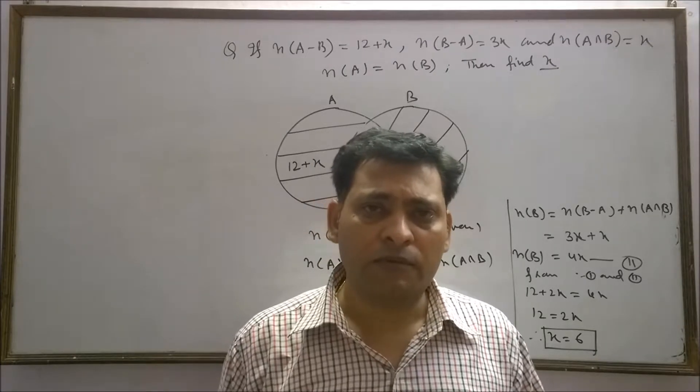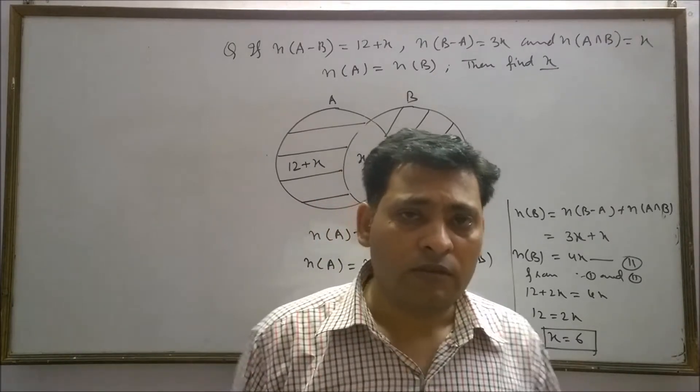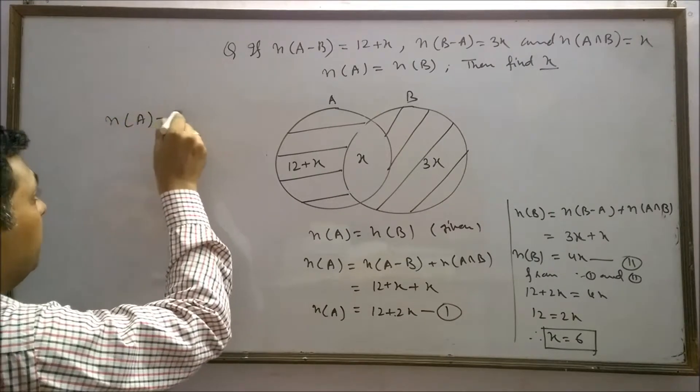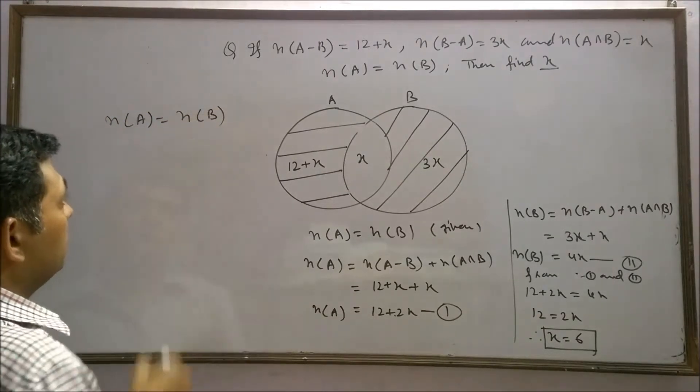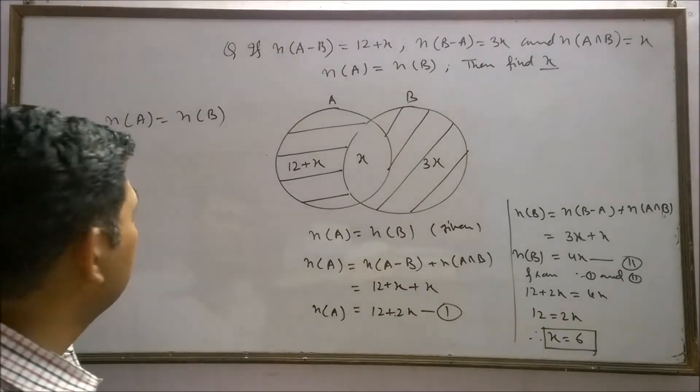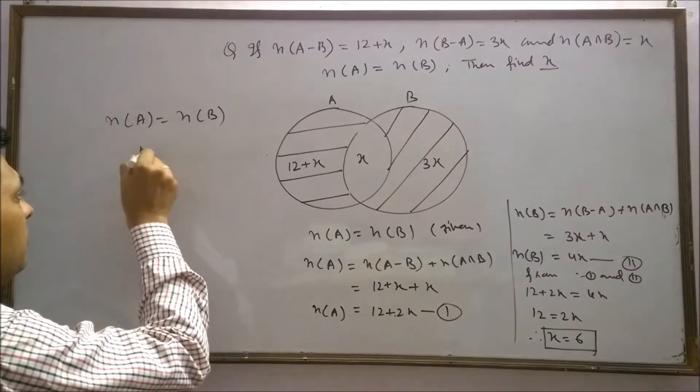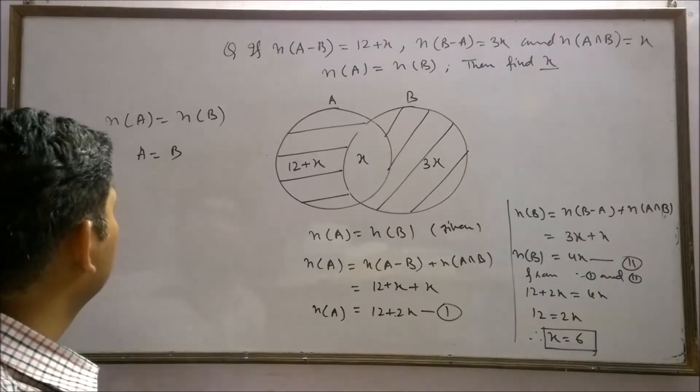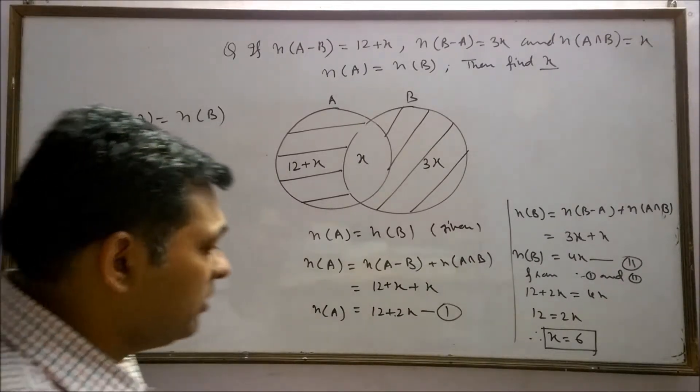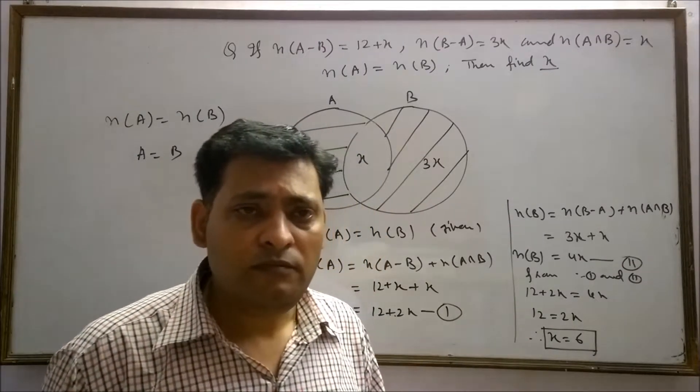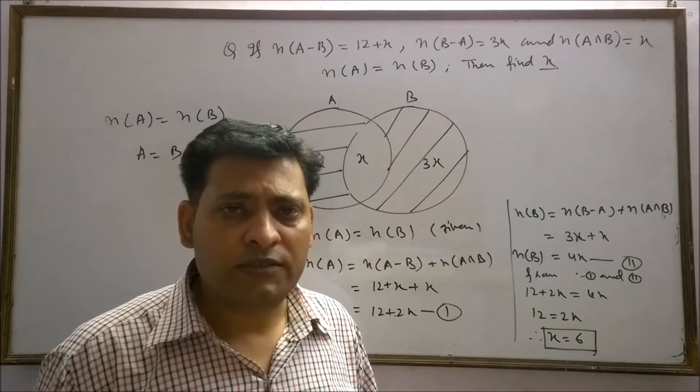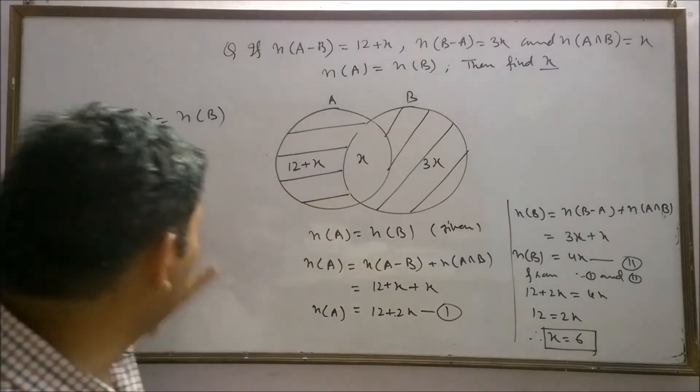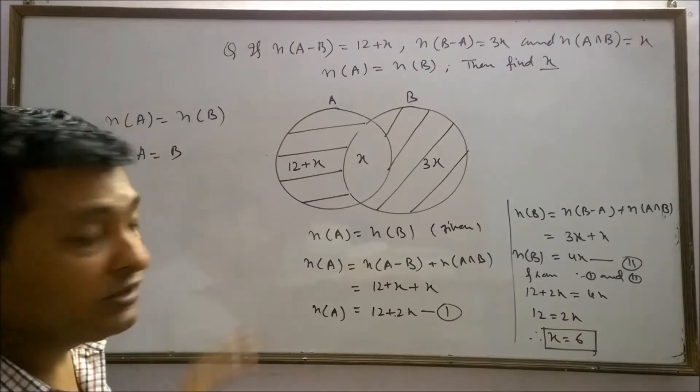Sometimes there is a misconception among the students. If n(A) is equals to n(B), somebody think set A is equals to set B, which is always not true. Here, n(A) equals n(B) represent equivalent sets. All equivalent sets may or may not be equal sets. But all equal sets are always equivalent sets.